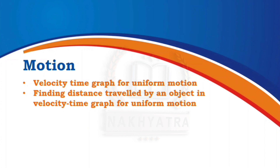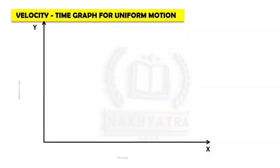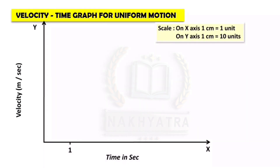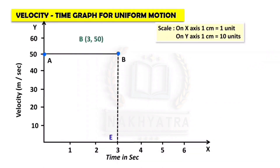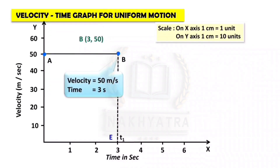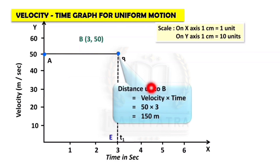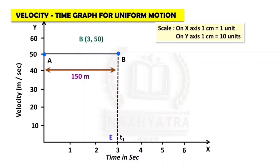Now see the velocity-time graph for uniform motion and finding the distance traveled by an object. Here on the x-axis the scale is 1 cm equal to 1 unit, and on the y-axis 1 cm equal to 10 units. A boy is jumping from point A to B. Consider point B at coordinates (3, 50): velocity = 50 m/s, time = 3 s. Distance up to B = velocity × time = 50 × 3 = 150 meters. So distance from A to B equals 150 meters.